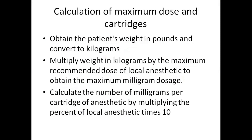Let's talk about the calculation of the maximum dose of the cartridges. This calculation is based on the guide of dental therapeutics, which indicates that cartridges contain 1.7 to 1.8 ml. Although many cartridges are labeled as 1.7 ml, the following calculations are based on 1.8 ml. The key points are: first, obtain the patient's weight in pounds and convert it to kilograms; then multiply the weight in kilograms by the maximum recommended dose of the local anesthetic to obtain the maximum milligram dosage; then calculate the milligrams per cartridge by multiplying the percent of the local anesthetic by 10, then multiplying by the cartridge size of 1.8 ml.